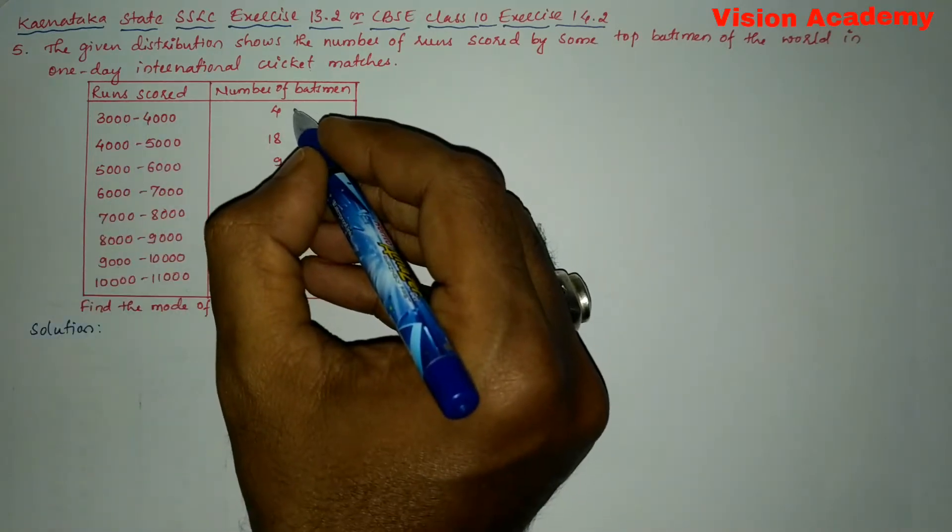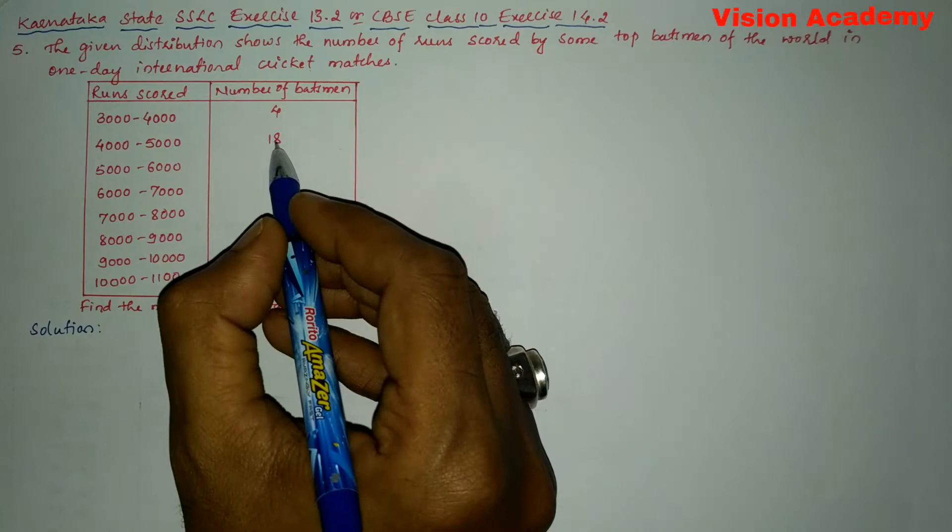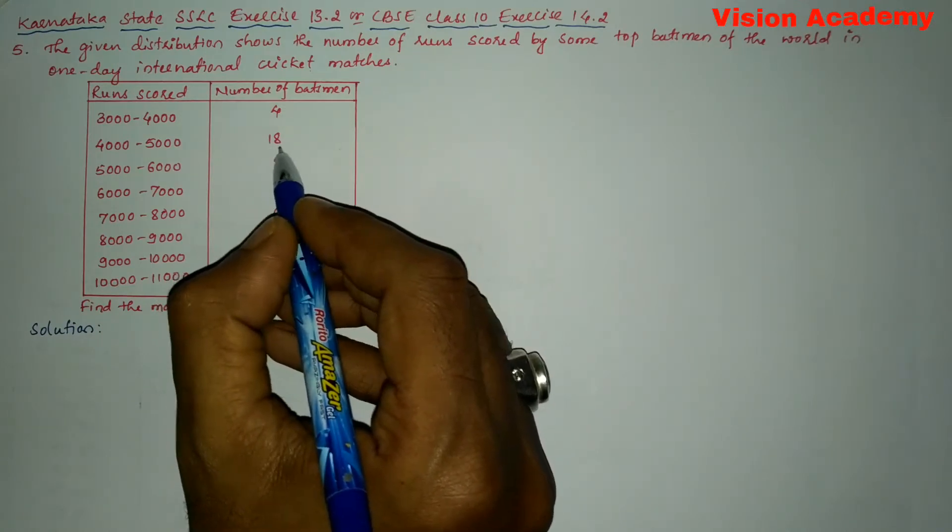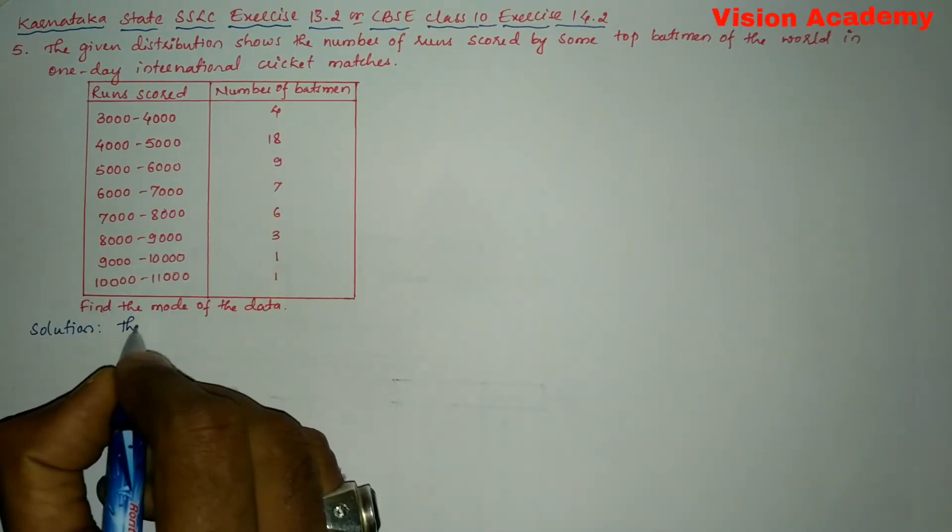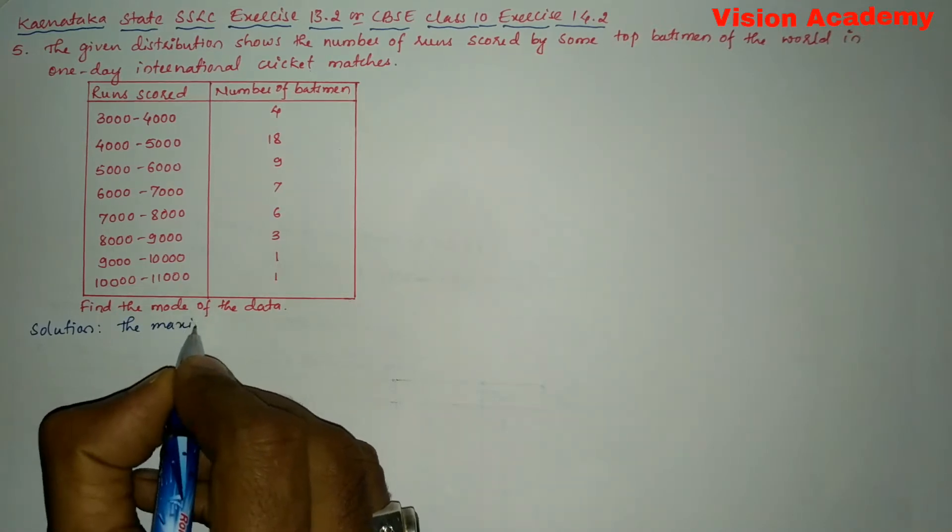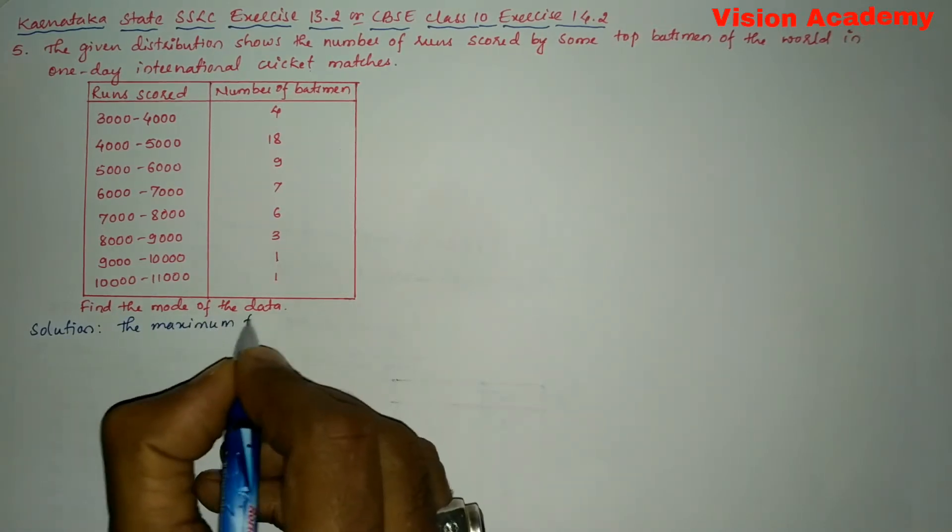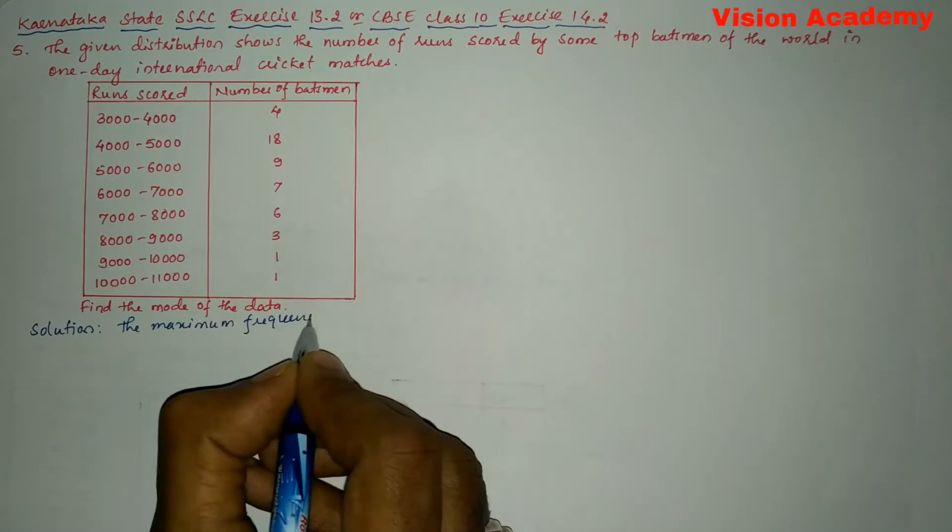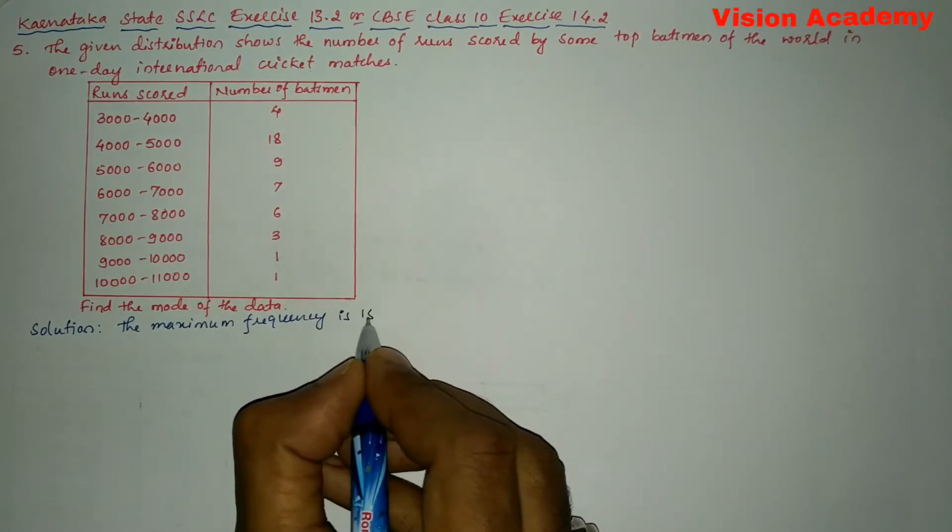And here in the number of batsmen, you can see the frequency, the maximum frequency is 18. Let us write the maximum frequency is 18.